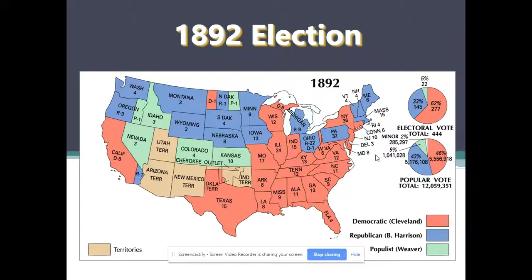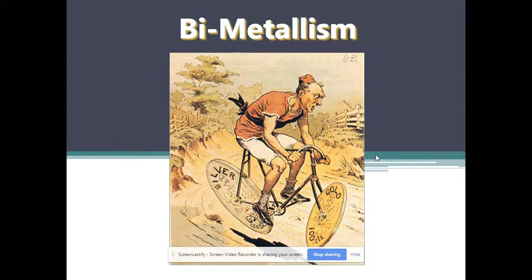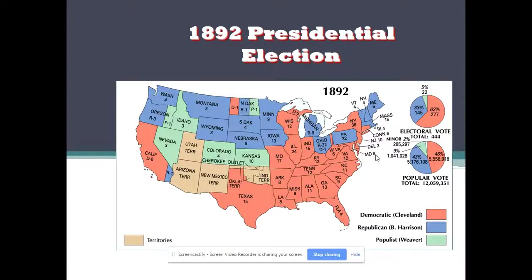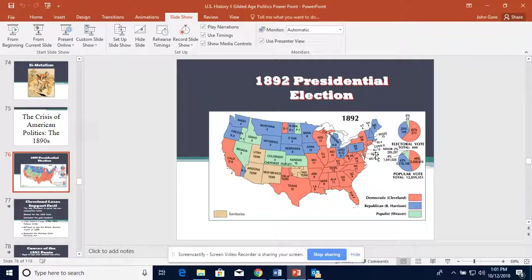In the election of 1892, Cleveland wins. This political cartoon argues that you can't have both gold and silver — it will create instability. We'll come back to this in part three.